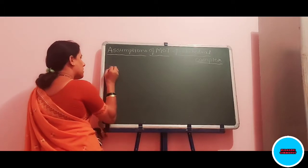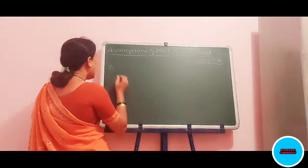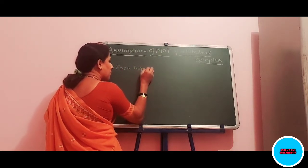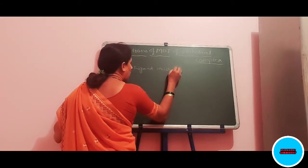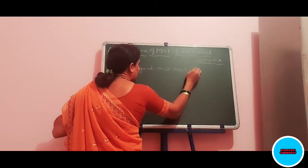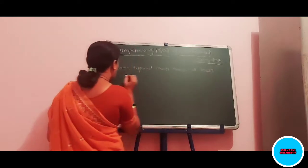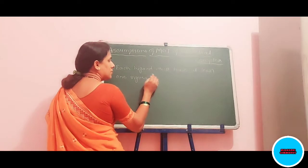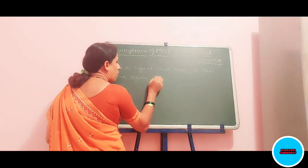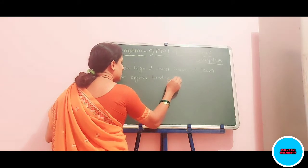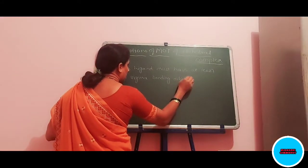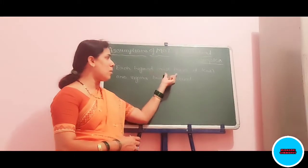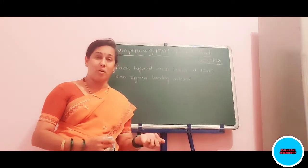In the second assumption, which is a compulsory one, each ligand must have at least one sigma bonding orbital.